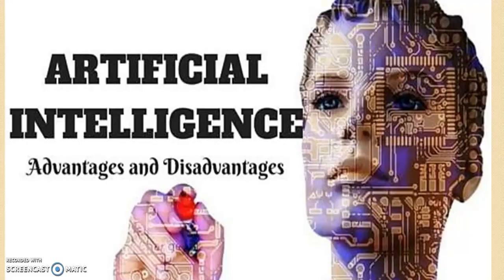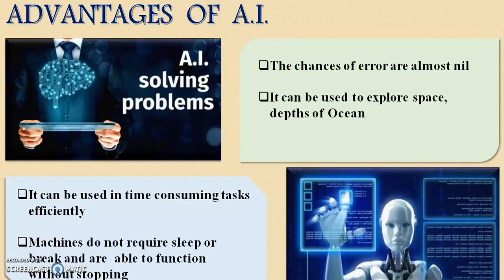Here are some advantages and disadvantages of artificial intelligence. The advantages of AI: the chances of error are almost nil when using an intelligent system. AI can also be used to explore space and the depths of the ocean. It can be used in time-consuming tasks efficiently — for example, multiplying a 10-digit number can be done faster by a machine than by a human. Most importantly, machines do not require any sleep or breaks, so they can continuously work without any stoppage.